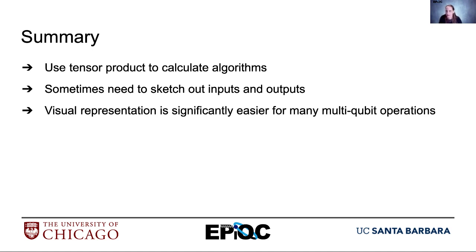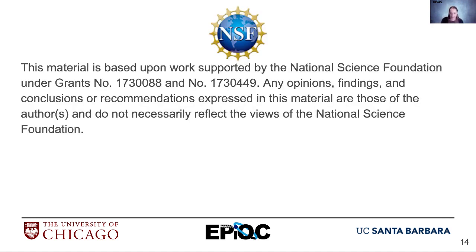That's why quantum computing is amazing — if we can figure out ways for it to be useful, which we have, and if we can build physical machines large enough to run these algorithms, then we can do things that classical computers simply cannot do. It just takes too much state space to simulate this classically.